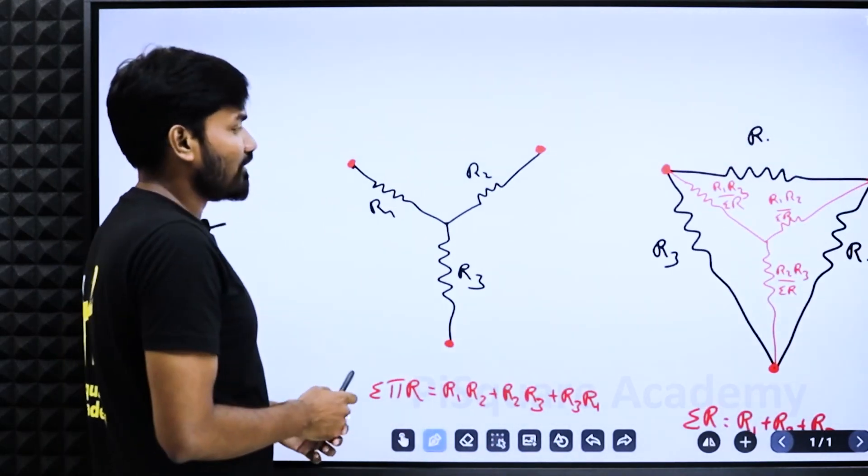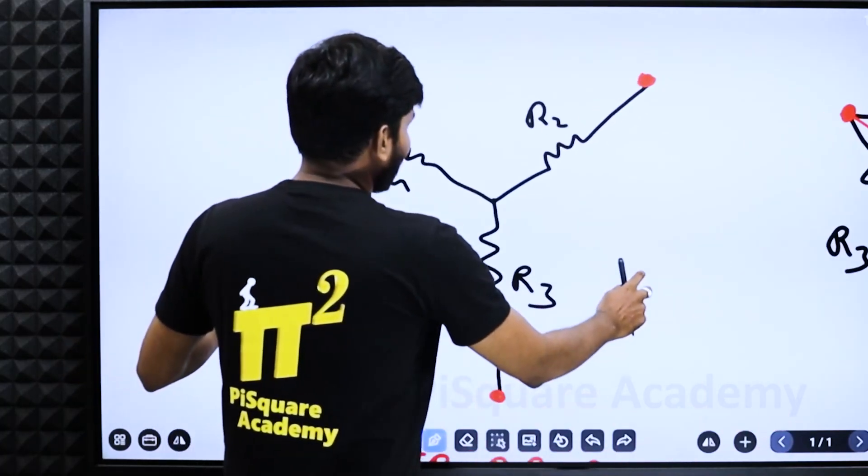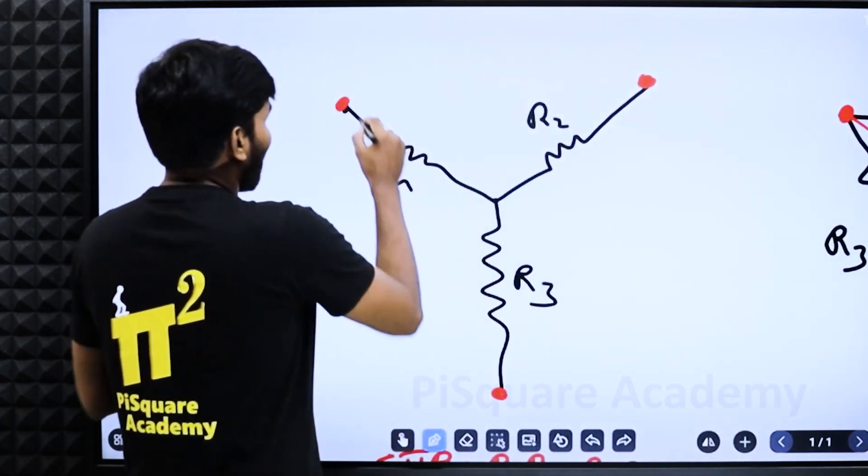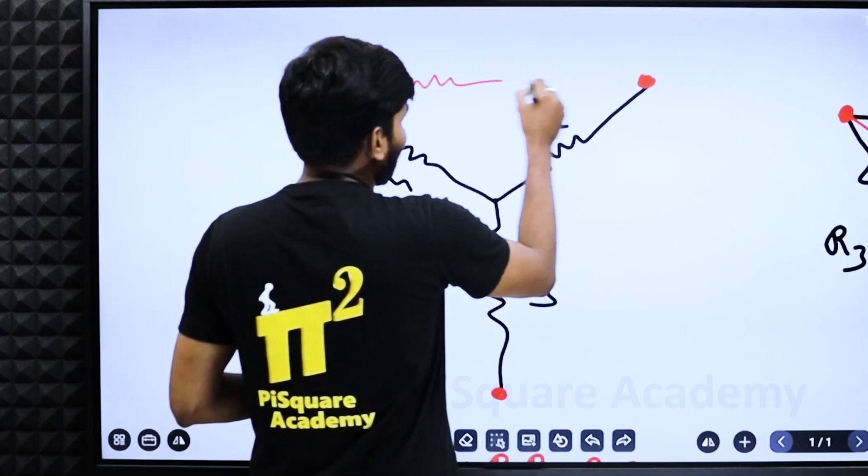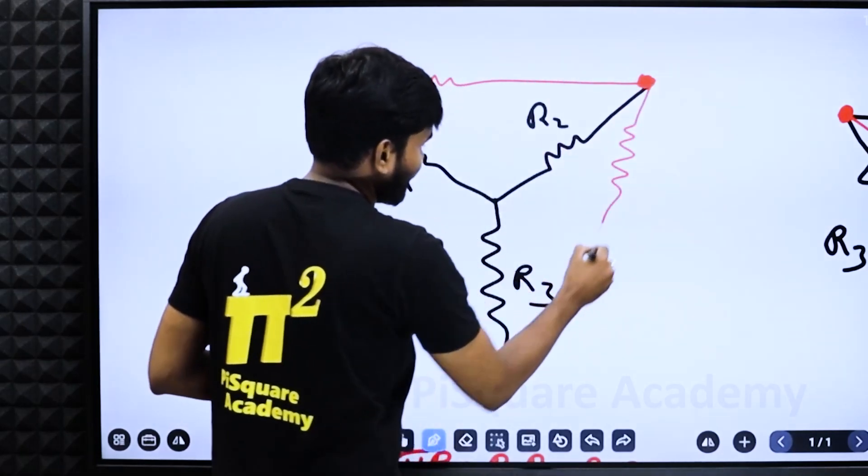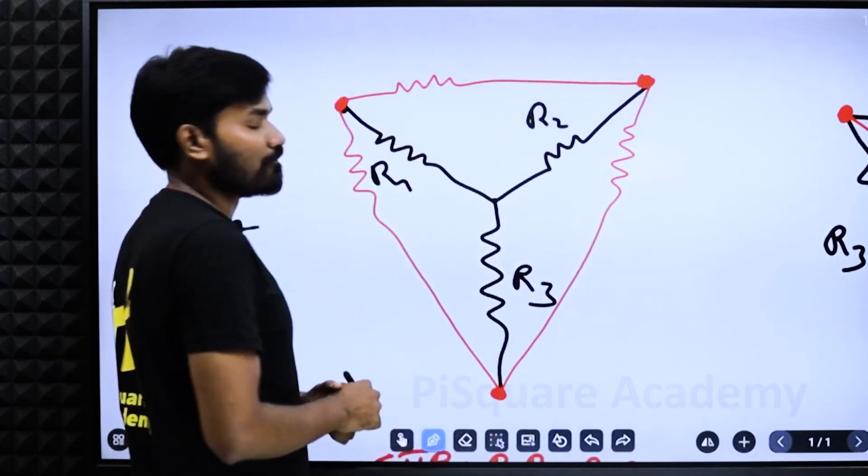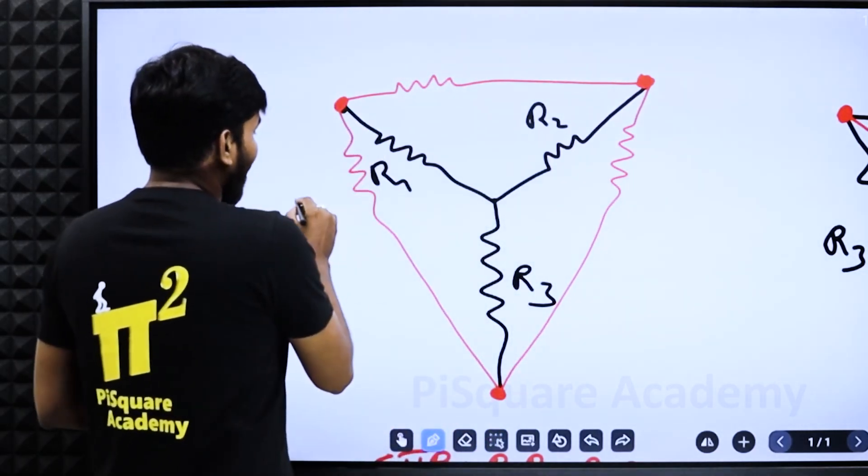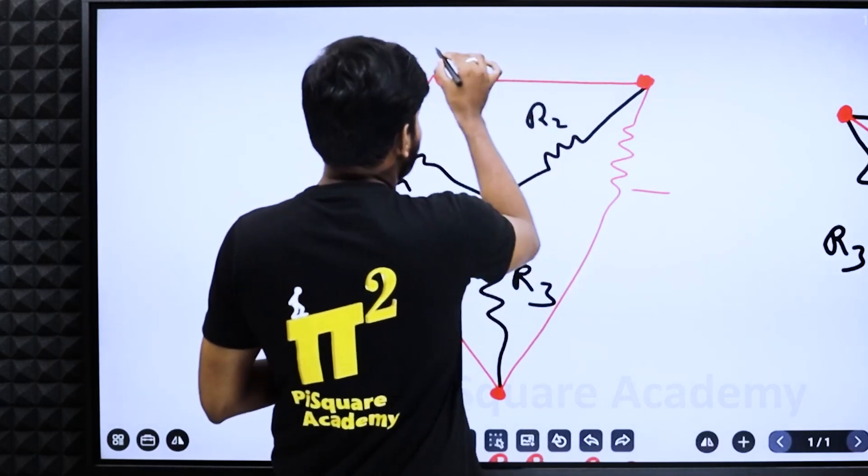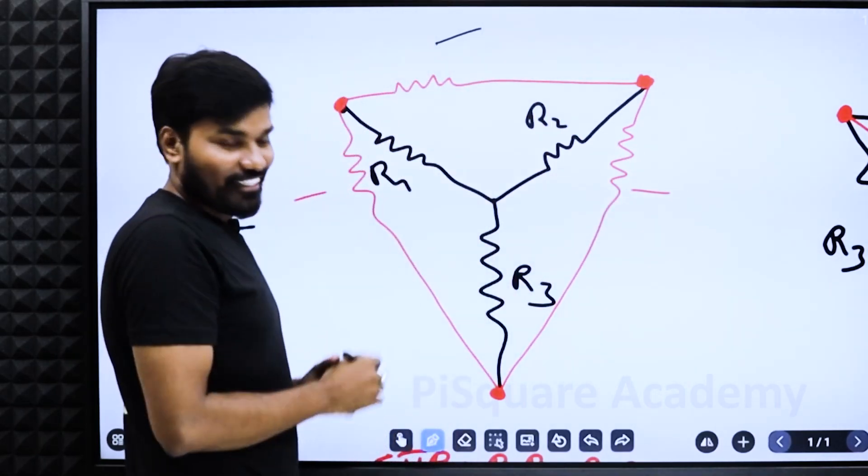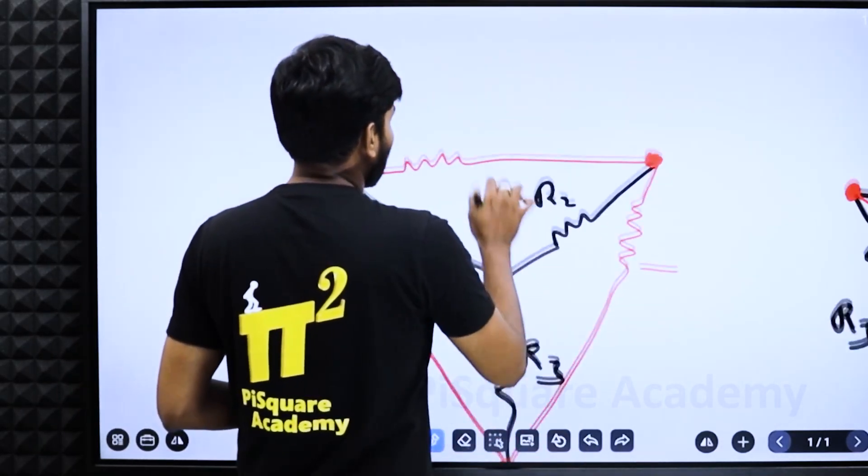Now the third step. Between these three points, construct the delta. Construct the delta between these three marked points. Now along with this line, this line is division line.